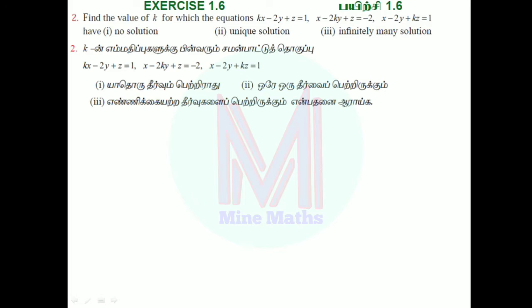Welcome to Mind Maths Exercise 1.6, Question Number 2. Find the value of k for which the equations kx - 2y + z = 1, x - 2ky + z = -2, and x - 2y + kz = 1 have different types of solutions.